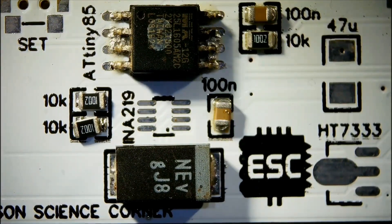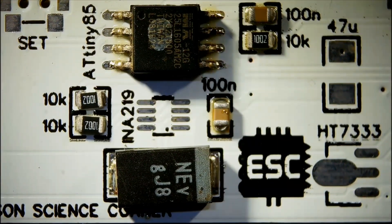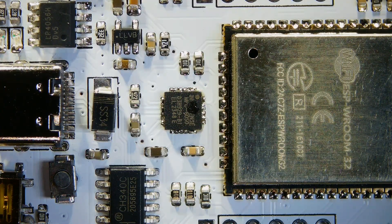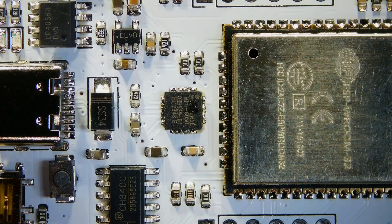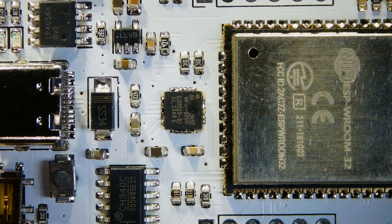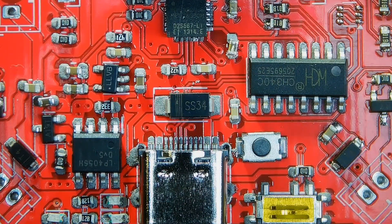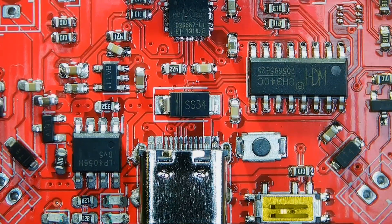So overall, the Miniware MHP50 is a fantastic tool for electronic enthusiasts and professionals. It is reliable, easy to use, and perfect for electronic hobbyists like me. So if you are looking for a hotplate, then you can try this out. You can find the purchase link from the video description.